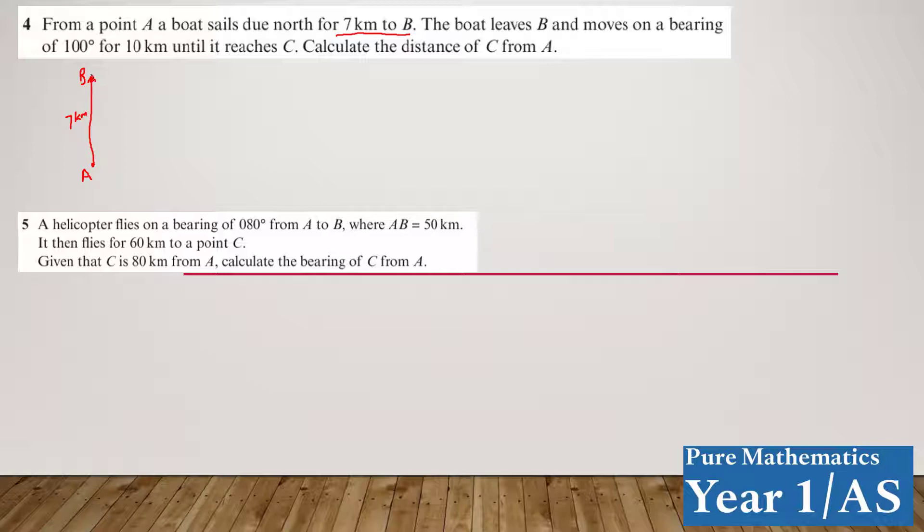Now, you must remember, bearings is from due north, and a boat leaves B and moves on a bearing of 100 degrees for 10 km until it meets C. So this angle here is going to be 100 degrees, because that is the bearing, and that's going to be 10 km, and this is going to be C.